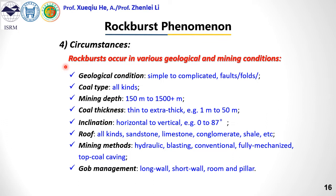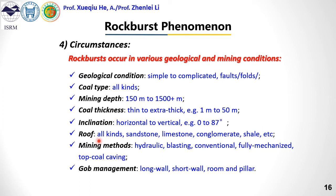Rock bursts occur in various geological and mining conditions. For geological conditions ranging from simple to complicated, including cases with faults, all have experienced rock bursts. Coal seam thickness ranges from thin to extra thick — for example, from 1 meter to 50 meters. Inclination ranges from horizontal coal seams to almost vertical coal seams. All kinds of roof have experienced rock bursts, including sandstone, mudstone, limestone, etc.